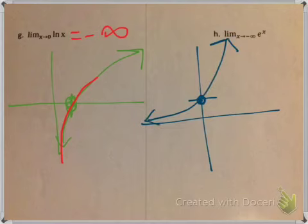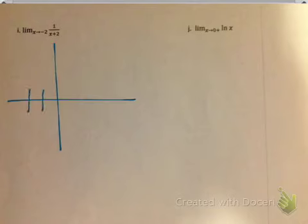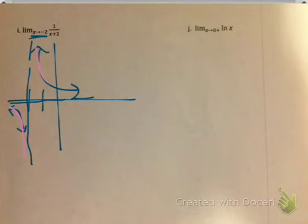Next: 1/(x+2) as x approaches negative 2. Quick sketch: I have a vertical asymptote at x = negative 2 and a horizontal asymptote at y=0, with curves here and here since it's positive. The limit as I approach negative 2 — from the left side, the graph goes down; from the right side it goes up. So my answer is does not exist, because the left limit does not equal the right limit.